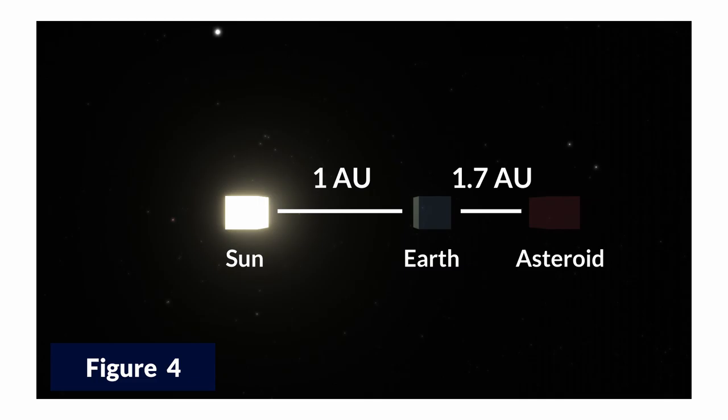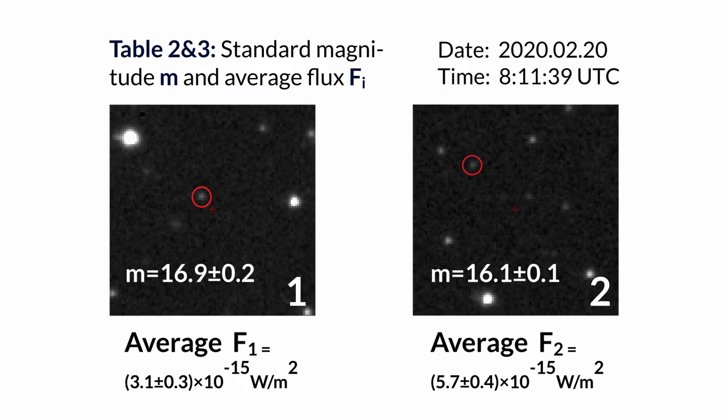The distance between Earth and the potential asteroids at the time of observation was 1.7 astronomical units. The standard magnitudes and the average flux for each asteroid were as follows. As you can see, asteroid 2 appeared brighter.